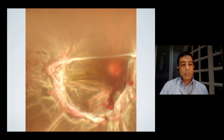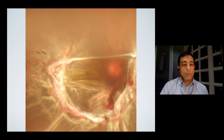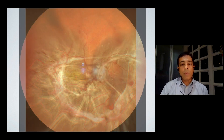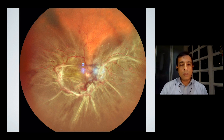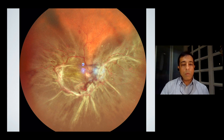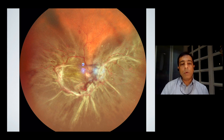This is a tractional rhegmatogenous detachment. You see the proliferations and the traction, and there's a hemorrhage in the central part, and then you see two breaks temporally. As you go to the wide field images, you see the whole extent beautifully — the extent of the detachment, as well as how the proliferations and the tractions extend. It gives the surgeon an idea about how one should progress, and it helps us explain to the patient the extent of the disease and the prognosis.